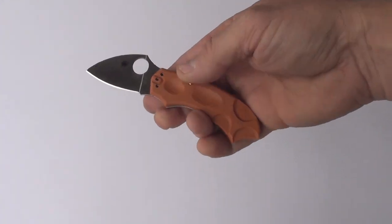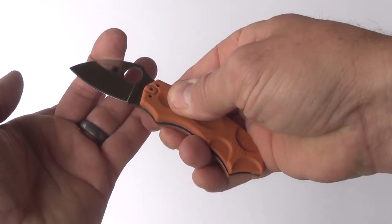Like other Spyderco knives, the Meerkat is easily opened with only one hand, using our trademark round hole.